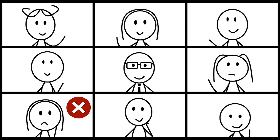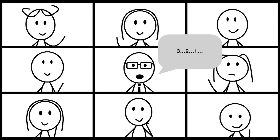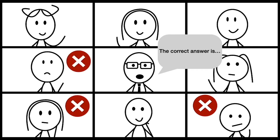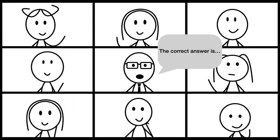If the moderator has finished reading the question, then the moderator will give the other players three seconds to buzz in. The same rule applies if no one buzzes in during the question. Three incorrect answers always ends a question, and the moderator will then read the correct answer and move on to the next question.